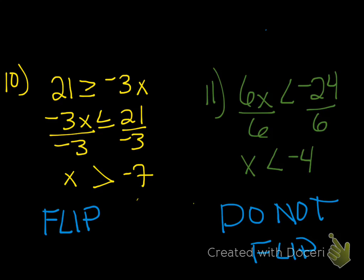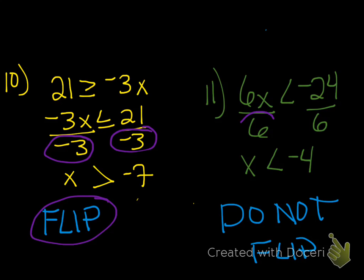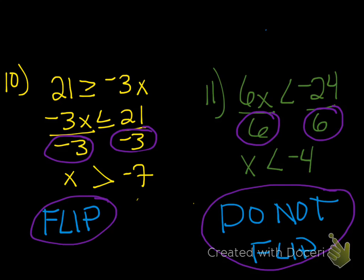Go ahead and try 10 and 11 — pause it, check it, and I'll show you the answer. Here are the answers to 10 and 11. The only thing you're going to struggle with is whether you flip it or you don't. Remember: if you multiply or divide by a negative number, you flip it. If you multiply or divide by a positive number, you do not flip it. That's something you're going to have to ingrain in your brain — you need to memorize that.